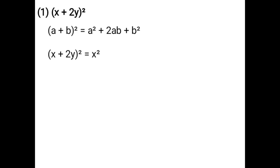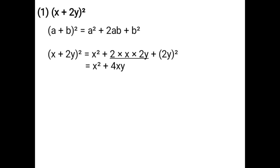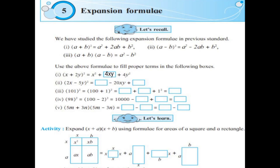That is: a² is x², plus 2ab is 2 × x × 2y, plus b² is (2y) whole square. Multiplying 2 × x × 2y gives 4xy. Square of the variable remains the same. (2y)² = 4y², since square of 2 is 4 and square of variable y remains the same. So the correct answer in the box is x² + 4xy + 4y².